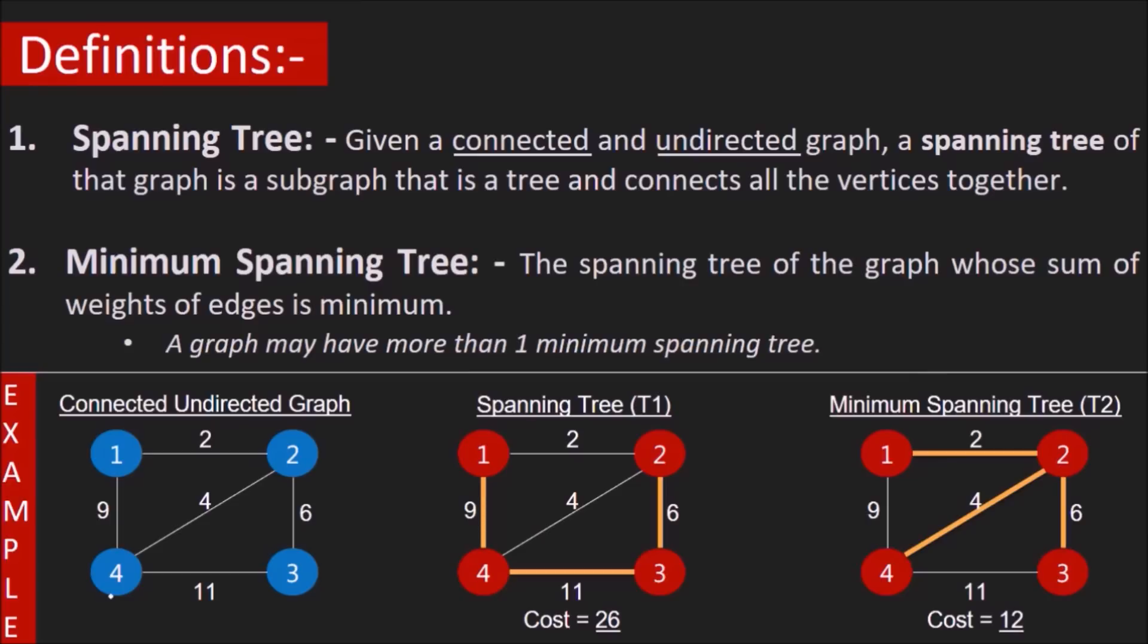What is a spanning tree? A spanning tree is a subgraph that has the same vertex set as the original graph and is also a tree, which means it must be connected and must not contain any cycles. A graph may have a large number of spanning trees but not all of them are minimum. A minimum spanning tree is the one in which the sum of weight of edges is minimum.